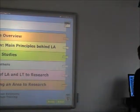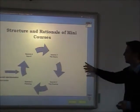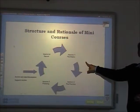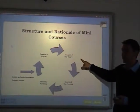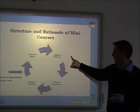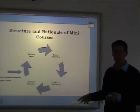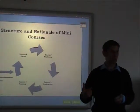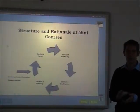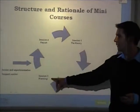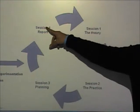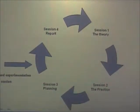So, course overview: basically we did the theory about two months ago — we looked at some of the theories and principles of learner autonomy. Today we're going to look at how the theory translates into practice. The next session, hopefully next week or the week after, is when we do our planning. Then we do our experimentation and action, and finally the last session is where we report back and decide what we've learned from the whole process.